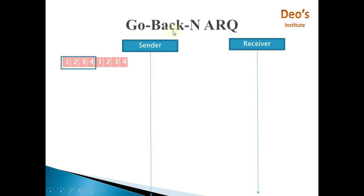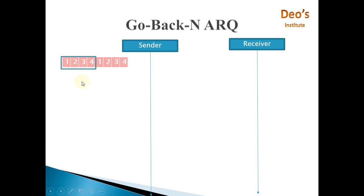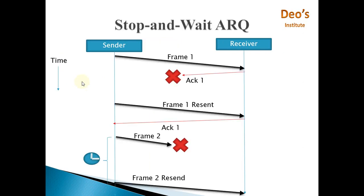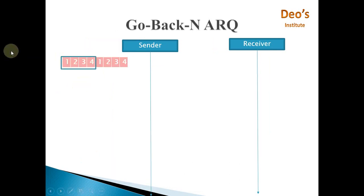Next is go-back-N ARQ, which is a sliding window protocol. In a sliding window protocol, both sender and receiver keep track of frames sent and received. At the sender, the window size is 4, meaning unlike stop-and-wait ARQ where the sender must wait for acknowledgement after each frame, here the sender can send 4 frames without waiting for an acknowledgement.